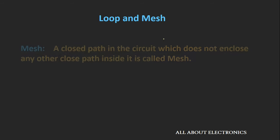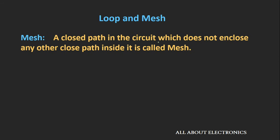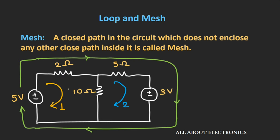Now let us see the concept of mesh. A closed path in the electrical circuit that does not enclose any other closed path inside it can be called a mesh. This circuit contains 3 loops, but loop number 1 and loop number 2 do not enclose any other loop inside them, so they are examples of meshes. Loop number 3 encloses loop 1 and loop 2 inside it, so it cannot be called a mesh. Therefore, this circuit contains 2 meshes.